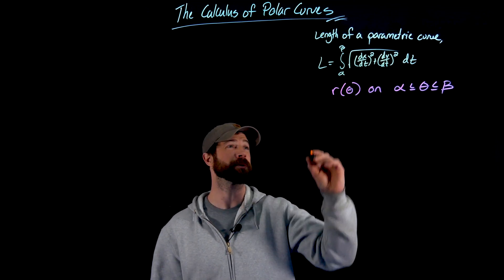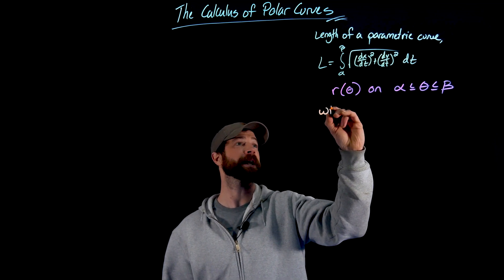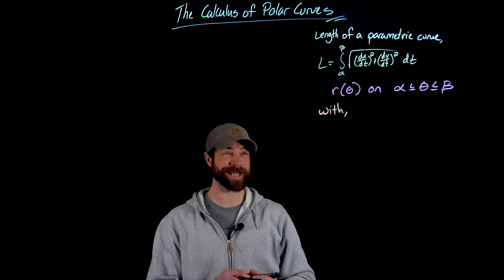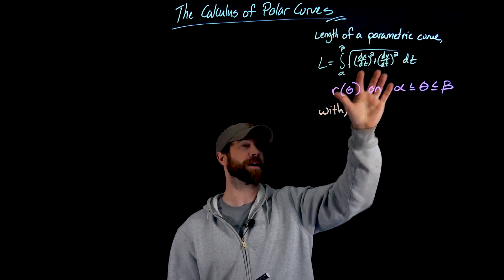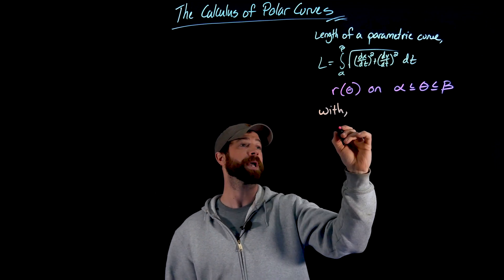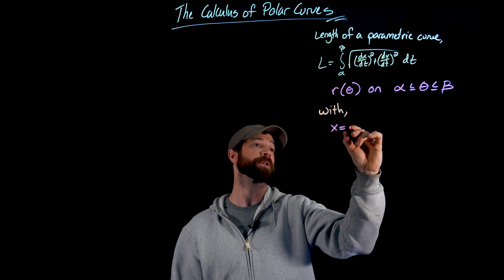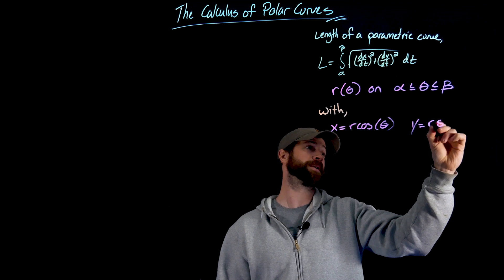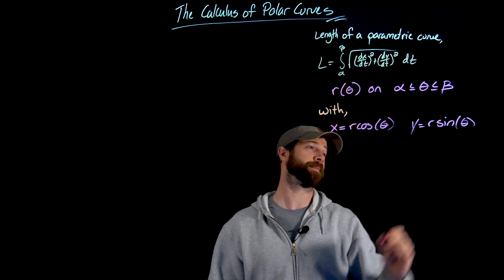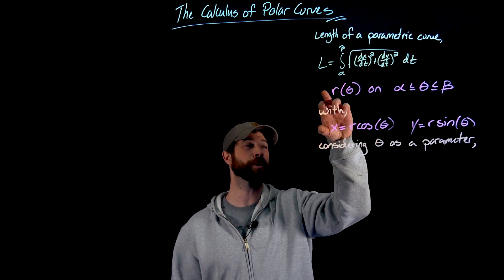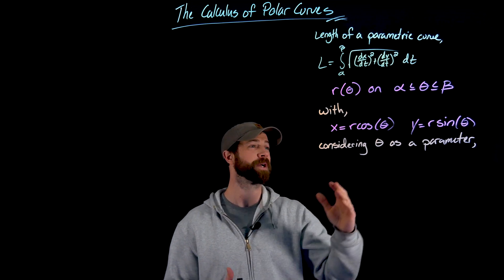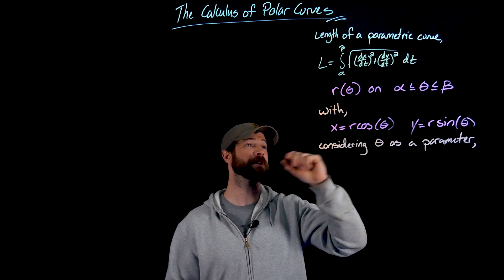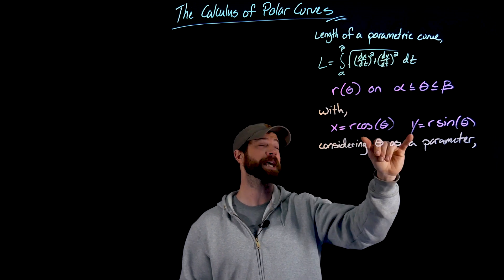We're going to bring x and y into the game because they appear in the parametric arc length formula. We have x = r·cosine(θ) and y = r·sine(θ). Given a polar curve described this way, we can consider θ to be a parameter that determines the value of r, and specifically x and y.